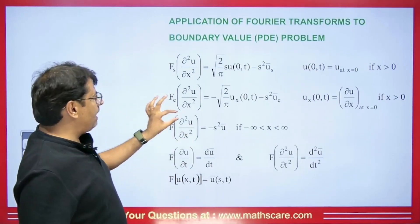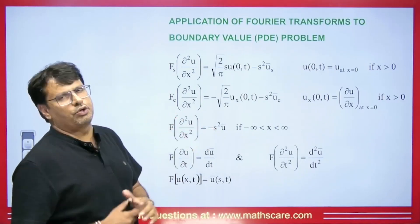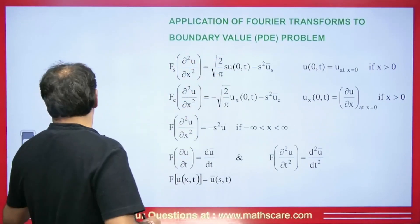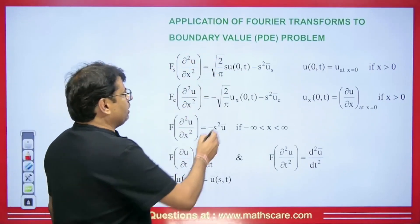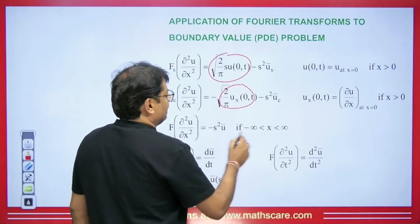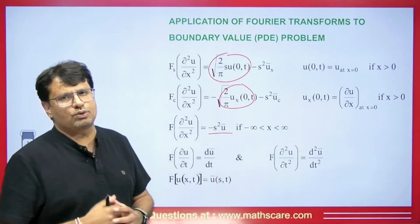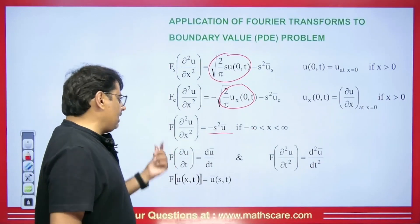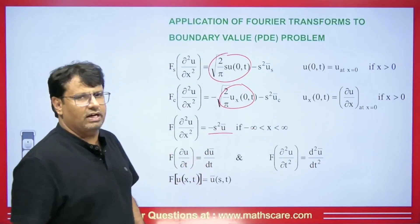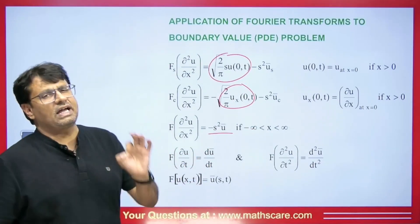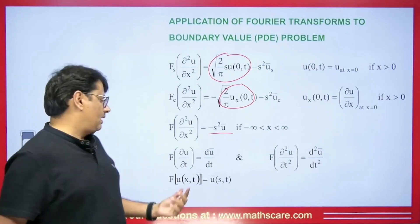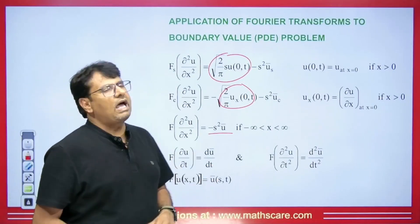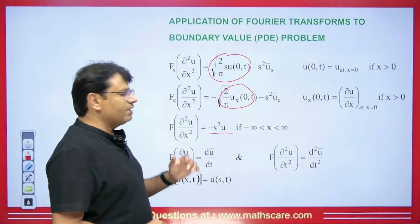If we apply the Fourier transform to ∂²u/∂x², it will be −s²ū. The boundary terms become 0, and it is −s²ū from x = −∞ to ∞. When we apply the Fourier transform with respect to x to the t-derivative, it becomes dū/dt. Note that the Fourier transform is always applied to x, not to t. If we take the Fourier transform of u(x,t), then x becomes s.